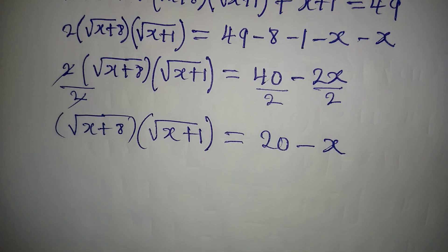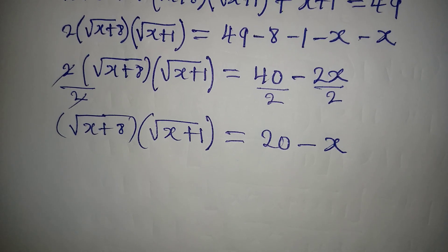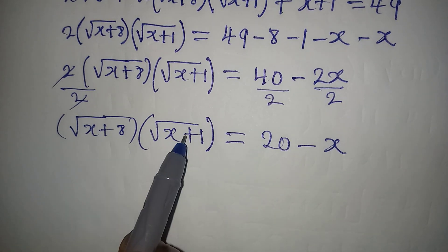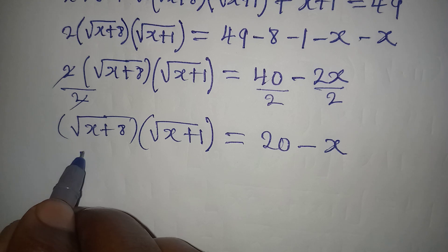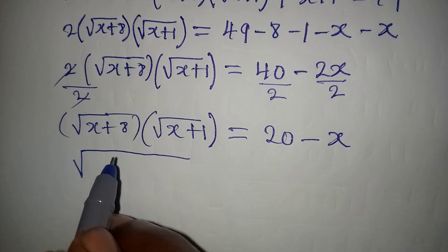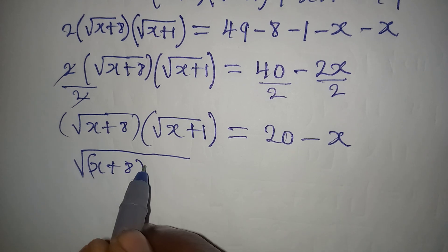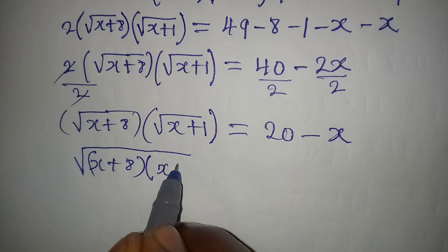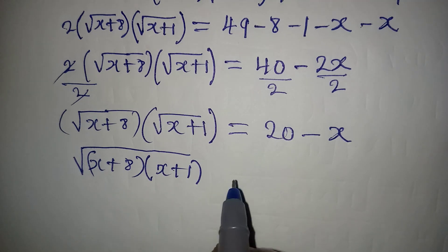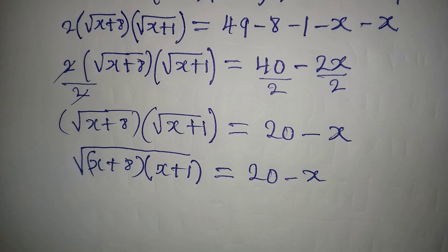The next thing we are going to do is combine the radicals. Both of them can be under the same square root sign, so we have square root of (x + 8)(x + 1) equal to 20 minus x.